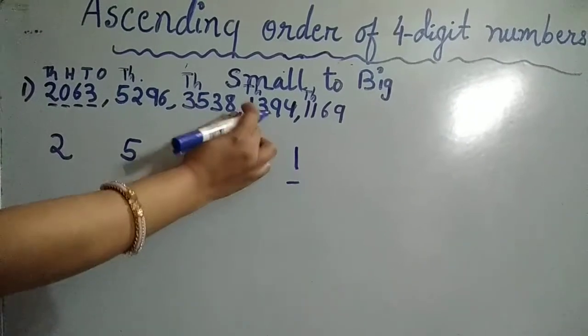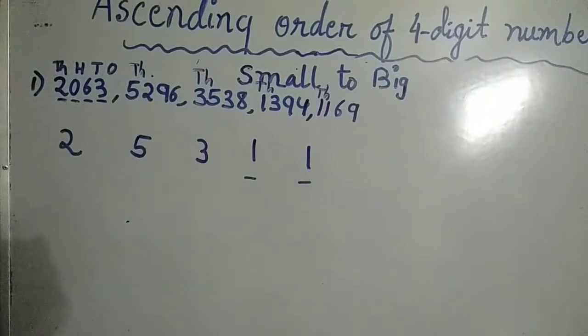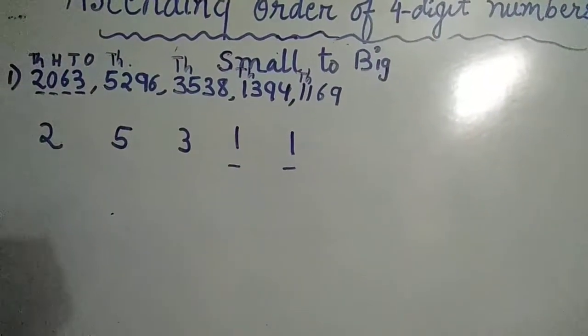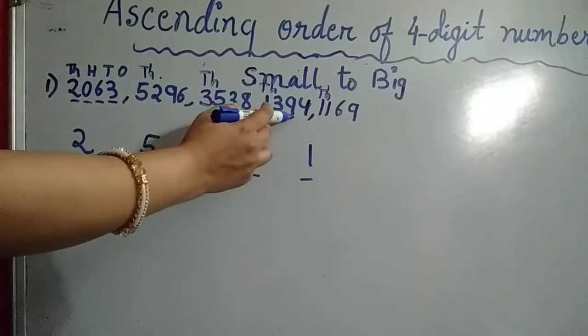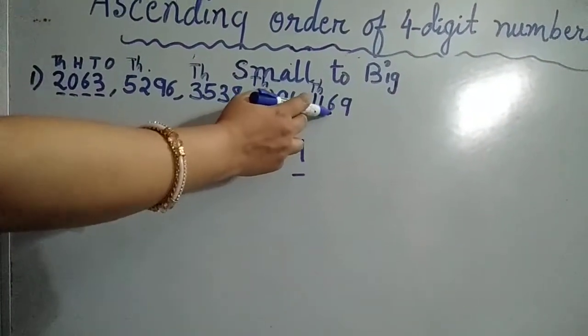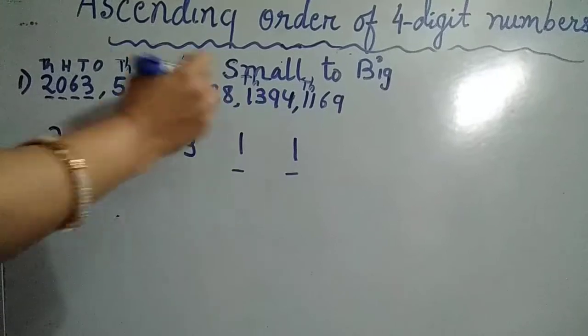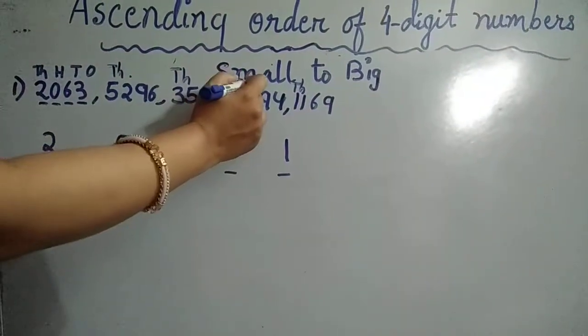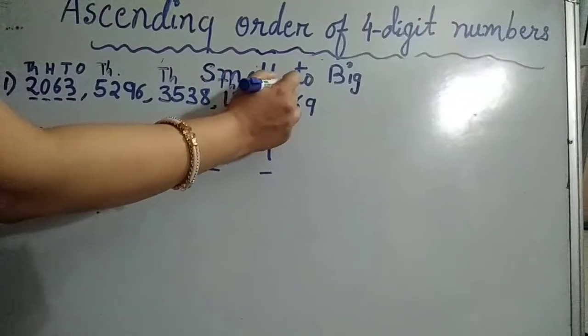As we have one in both numbers in the thousands place, the children might get confused as to which is the smallest of these two numbers. In this case, we have to consider the digit in the hundreds place.